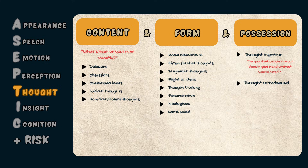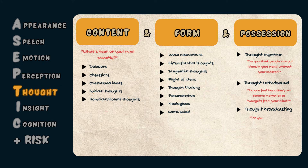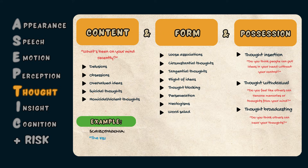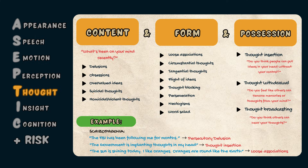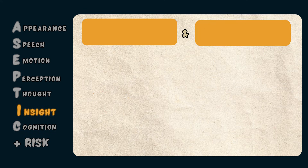Thought withdrawal is the belief that one's thoughts can be removed from their mind, assessed by asking 'Do you feel like others can remove memories or thoughts from your mind?' Thought broadcasting is the belief that others can hear a patient's thoughts, assessed by asking 'Do you think other people can hear your thoughts?' For example, a patient with schizophrenia may say 'The FBI has been following me for months' — a persecutory delusion — or 'The government is implanting thoughts in my head,' which is thought insertion. Saying 'The sun is shining today, I like oranges, oranges are round like the earth' is an example of a loose association.